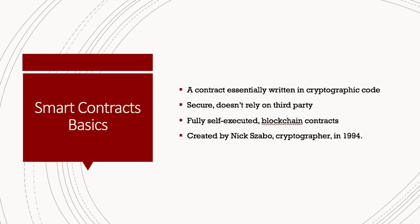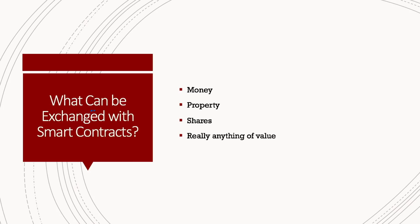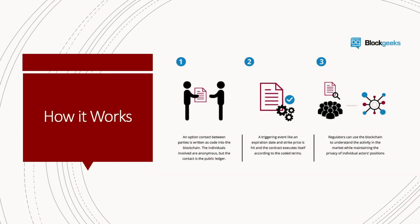This would result in ledger feedback such as the transferring of money and receiving of a product or service. Anything of value can be exchanged with smart contracts — money, property, shares, really anything that has value associated with it. Here's a quick graphic from BlockGeeks that breaks down in the simplest terms how a smart contract works.